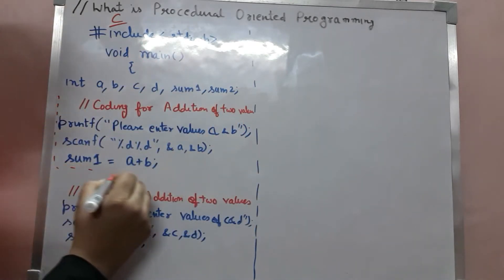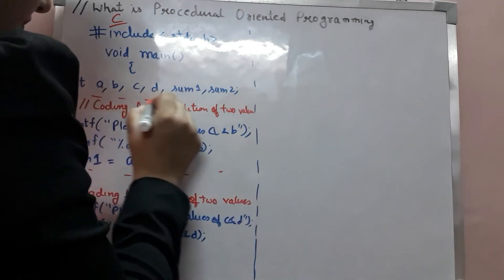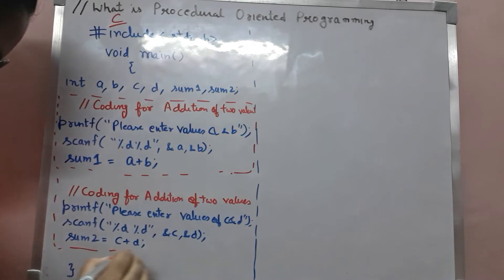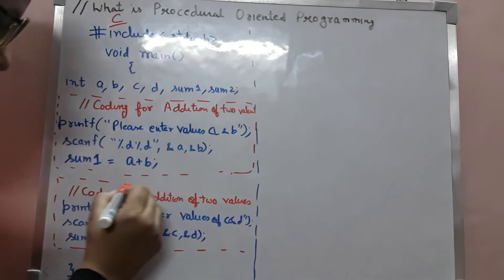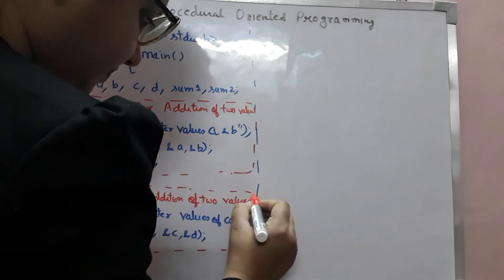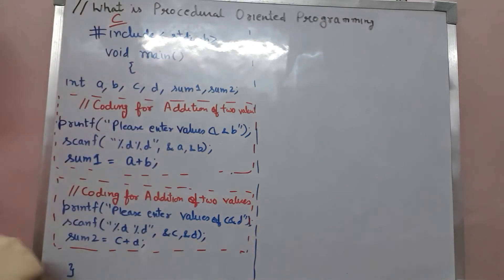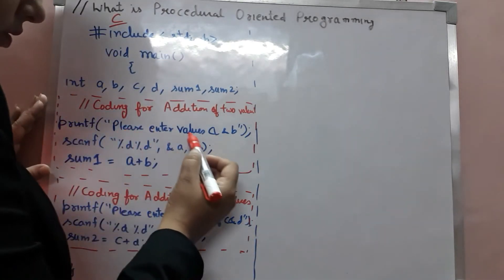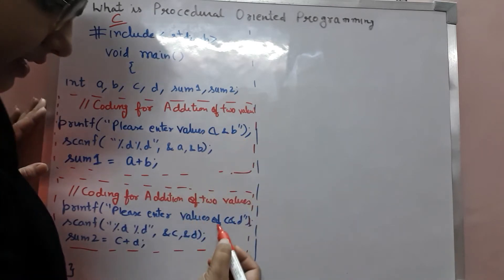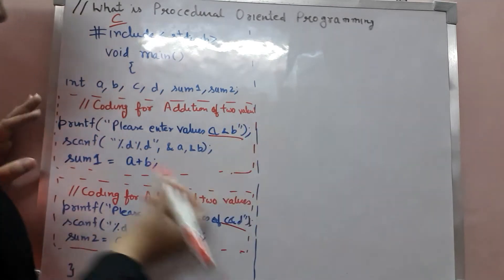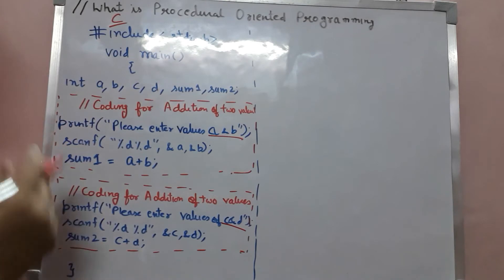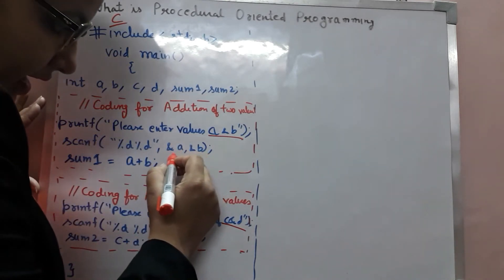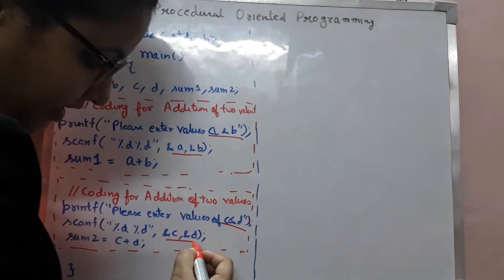These three lines and these three lines, they are similar. They are asking user to input value into A and B variable. Here, the variable names are different. Scanner is taking data from user and giving them to A and B variable and C and D variable.